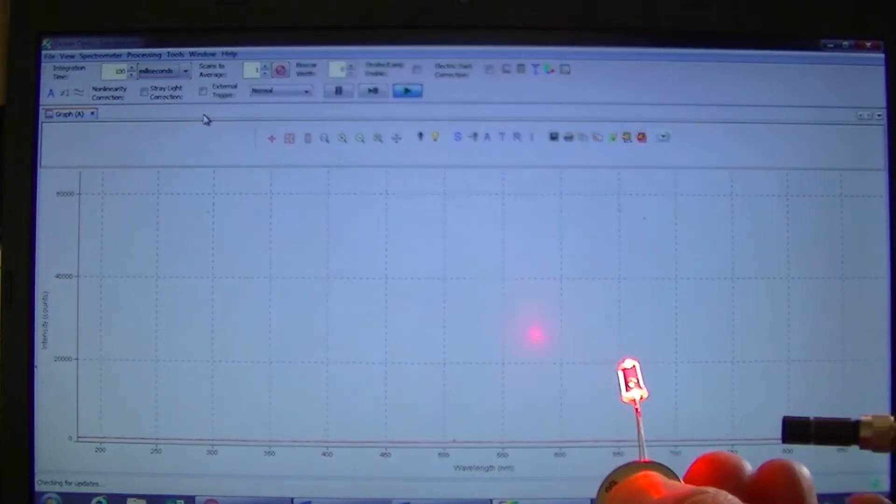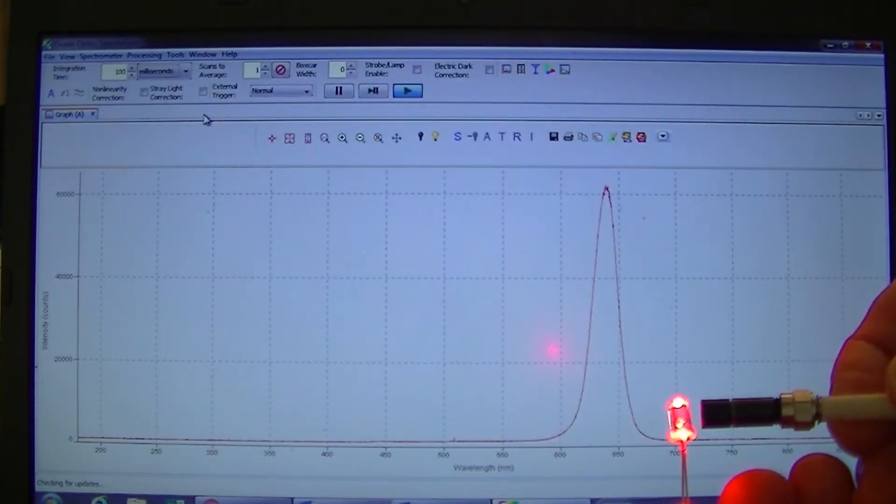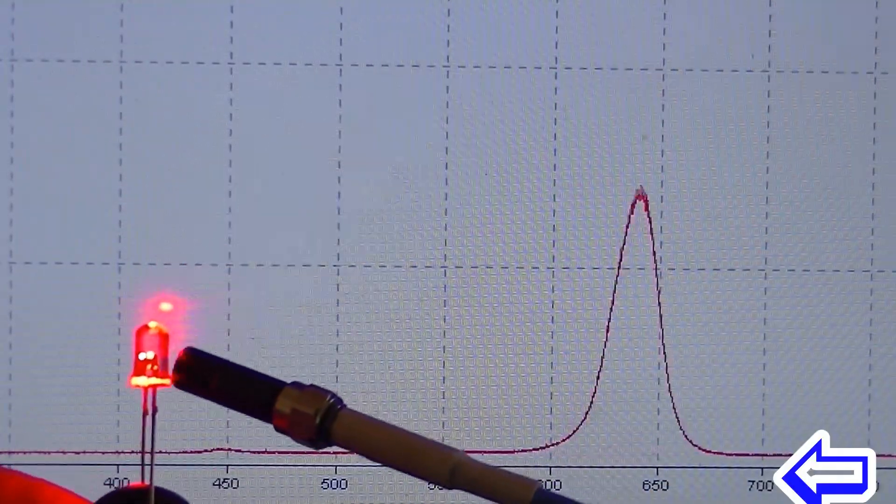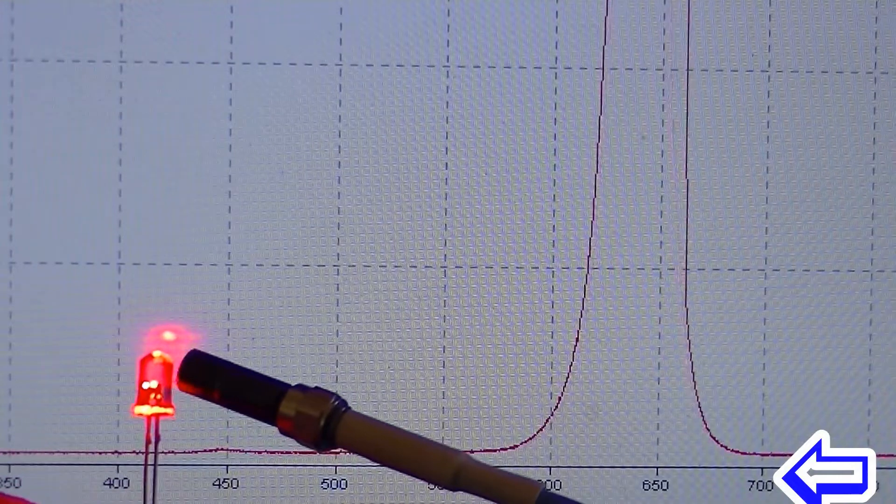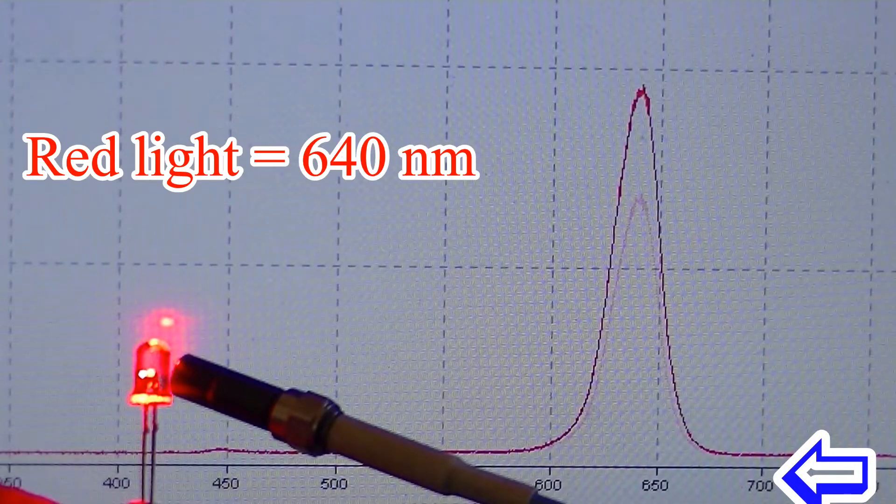You can see here I'm using the emission spectrometer to measure the wavelength of a red LED. The numbers running along the bottom of the screen indicate the wavelength of light in units of nanometers. So it looks like this red LED has a wavelength close to 640 nanometers.